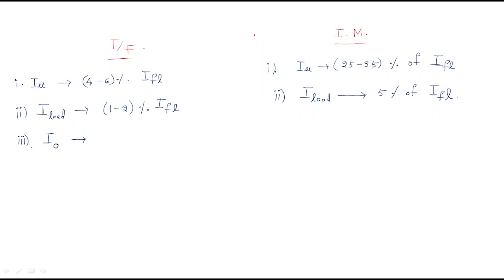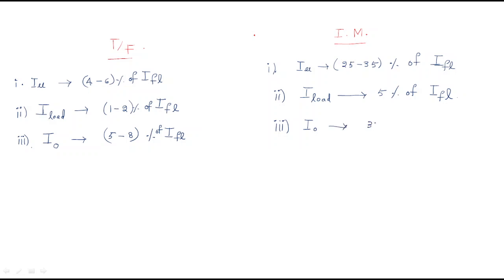The no-load current of the transformer is 5 to 8% of the full load current. In the induction motor, the no-load current is 30 to 40% of the full load current. Every time, the no-load current and full load current of the induction motor are higher than those of the transformer.